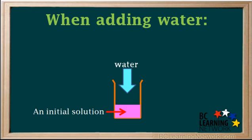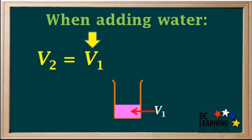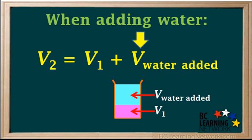Another simple equation is frequently used to calculate the final volume when water is added to an initial solution. The final volume, V2, equals the initial volume, V1, plus the volume of water added. In other words, when you're adding water, the total volume, V2, will be the sum of the initial volume, V1, and the volume of water added.